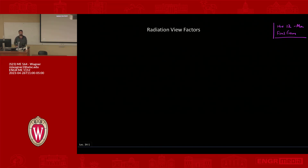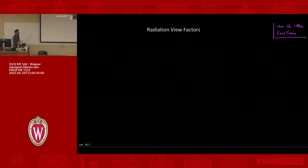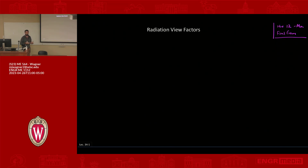We are talking about radiation. Last time we went through the concepts of what radiation looks like as a function of wavelength — what radiation looks like for a black body. What we're going to talk about today is, in a practical sense, how much radiation is going from one surface to another surface. That's what we care about in a heat transfer class, so we need a method to estimate that.